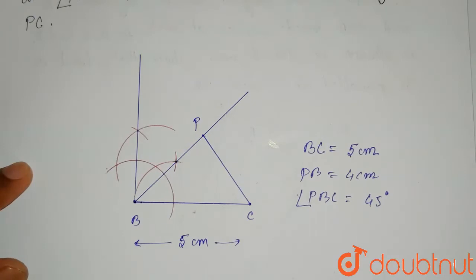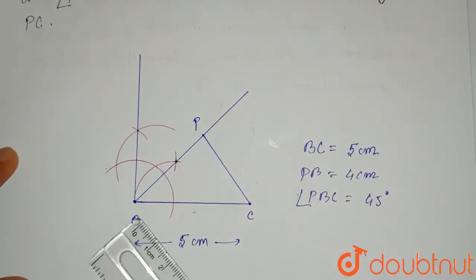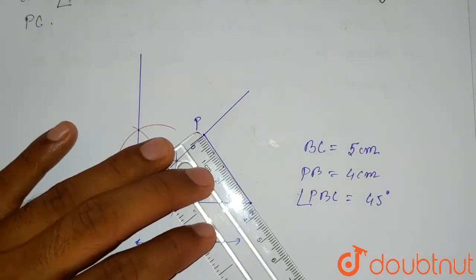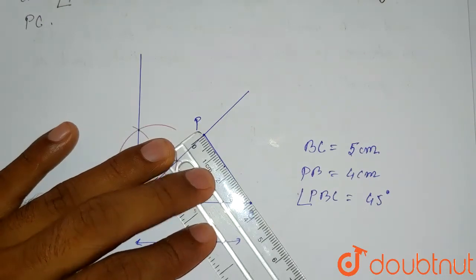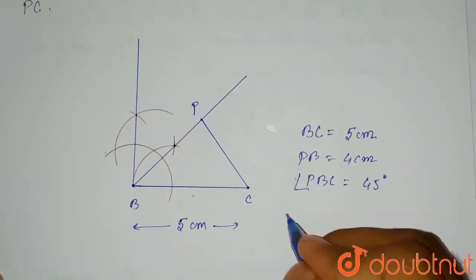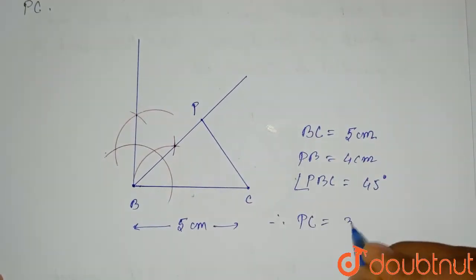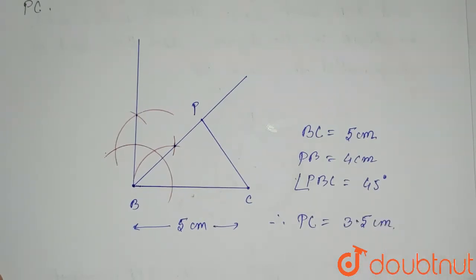Now we have to find the length and record the length of PC. So if we measure the length of PC, it has come to be 3.5 centimeters. So therefore, PC equals to 3.5 centimeters.